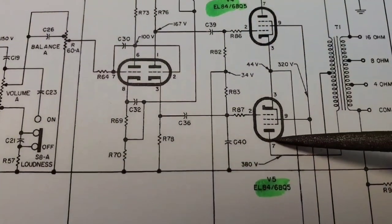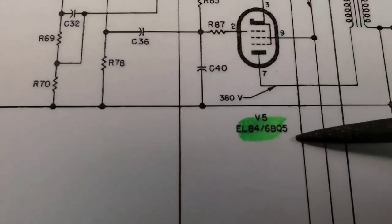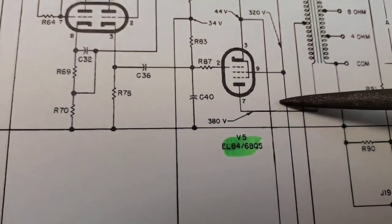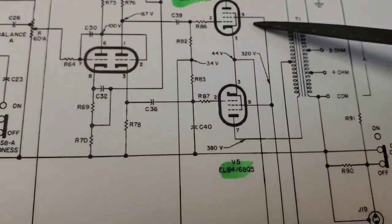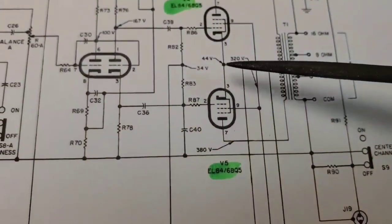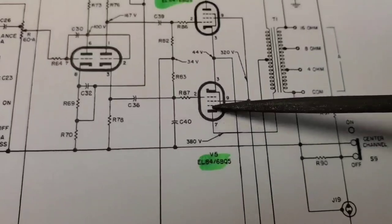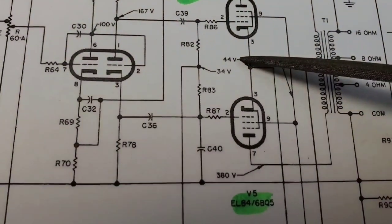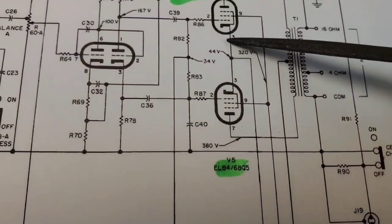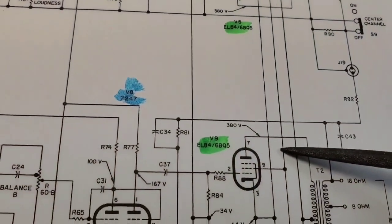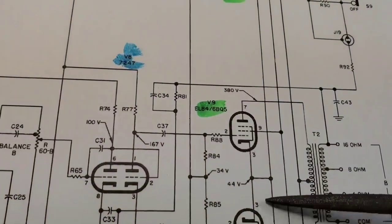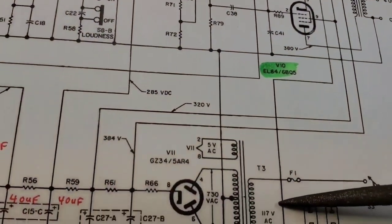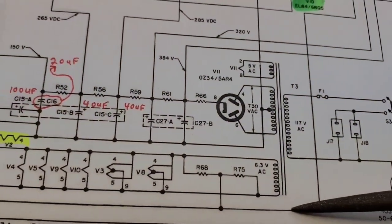Here's the cathodes to the output tubes. These are 6BQ5, EL84s. So here are the cathodes. Now you notice they're connected together. These are the grids. I'm sorry. Here's the cathodes. These are the plates. These are the cathodes. The cathodes got that little hook on it. See, 44 volts, low voltage. So these are connected together. This comes down. It will connect to the other two cathodes and continue on its way down. Now this has to go to ground somehow. If it was fixed bias, it would go directly to ground. Automatic bias, it has to pass through a resistor.